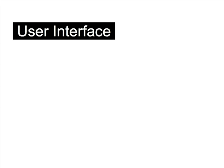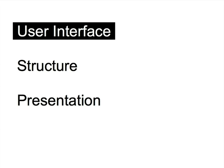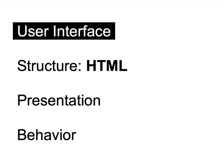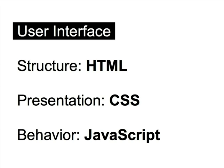A user interface can basically be broken down into three distinct pieces. First, there's the structure, which says what the different parts of the content are and how they're related. Then there's the presentation, which says how the content should be displayed and formatted visually. And finally, there's the behavior, or how the content reacts and changes based on user interaction. These three components of the user interface map directly to the three technologies we're covering: HTML defines the structure, CSS controls the presentation, and JavaScript creates the behavior.